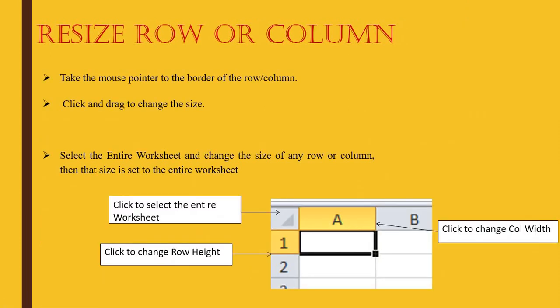Resize row or column — to change the size, you click on the border of the heading. You cannot click anywhere else; you have to click specifically on the border of the heading. If you click on the column heading border and drag, the column width will change. If you click on the row heading border and drag, the row height will change. To make the entire worksheet uniform, select all with Ctrl+A or the triangle, then resize.